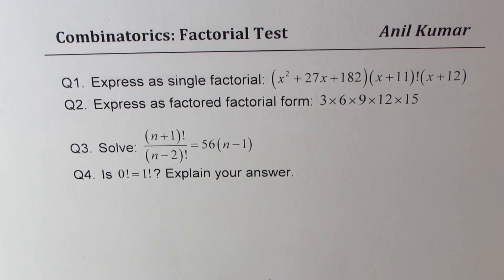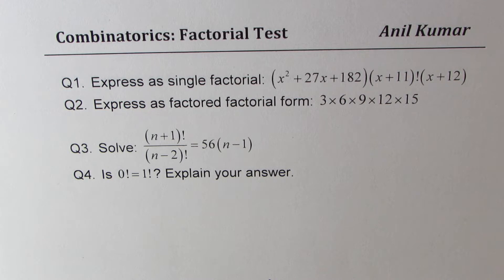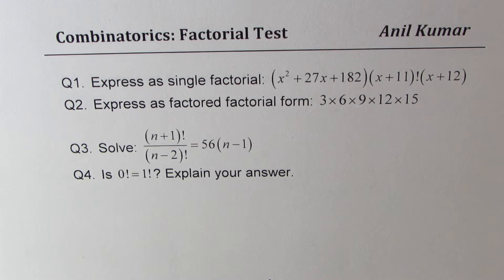Question number one: express as a single factorial x squared plus 27x plus 182, times x plus 11 factorial, times x plus 12. Question number two: express in factored factorial form 3 times 6 times 9 times 12 times 15. Question number three: solve the equation n plus 1 factorial divided by n minus 2 factorial equals 56 times n minus 1. Question number four is a communication question: is 0 factorial equal to 1 factorial? Explain your answer.